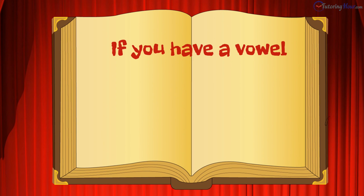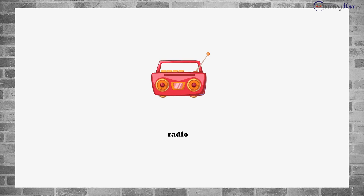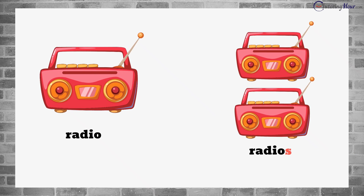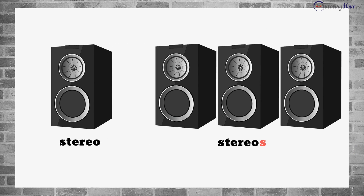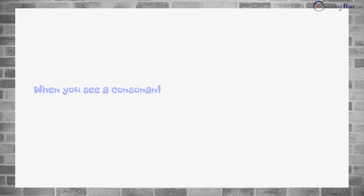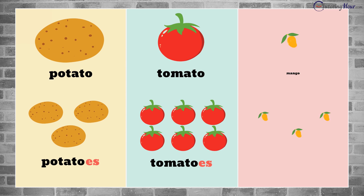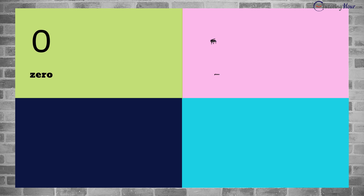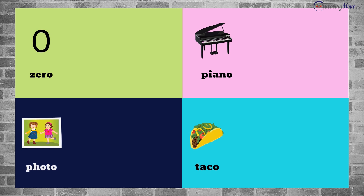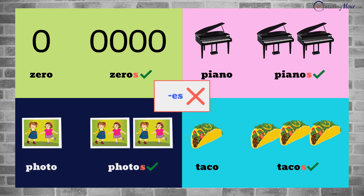If you have a vowel and O at the end, add an S. So radio becomes radios, and stereo when many changes to stereos. But when you see a consonant and an O at the end of the word, add an ES — we have potatoes, tomatoes, and mangoes. There are some exceptions though: zero, piano, photo, and taco take S, not ES.